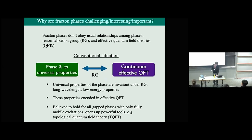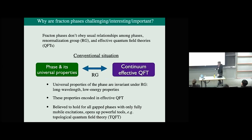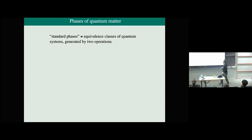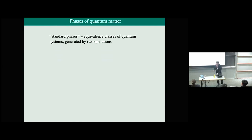When this picture does hold, it opens up very powerful tools — for example, topological quantum field theory — which is part of what allowed us to make very rapid progress understanding topological phases. This talk is going to be focused on the phases-of-matter and RG side of this picture, not so much on quantum field theories.